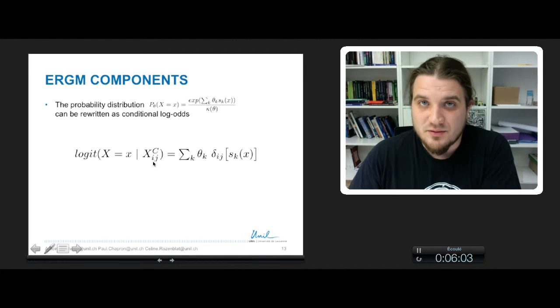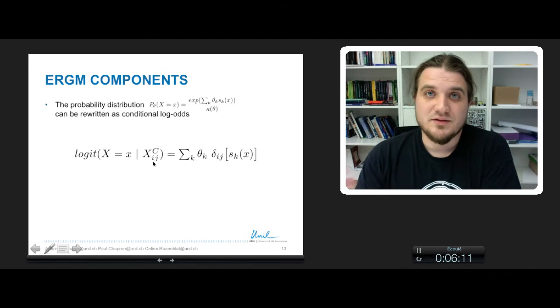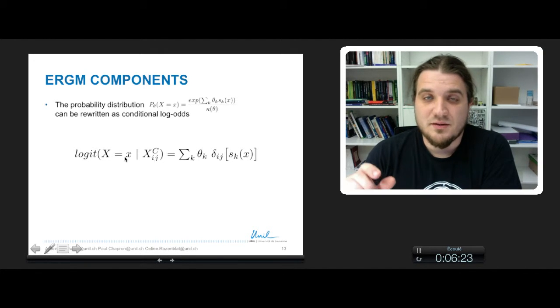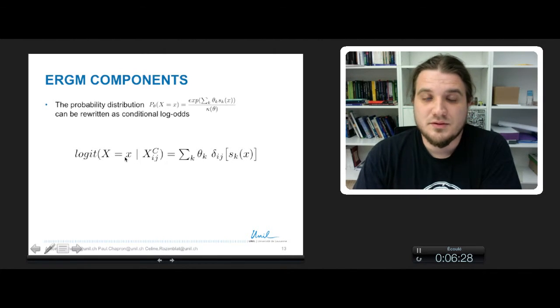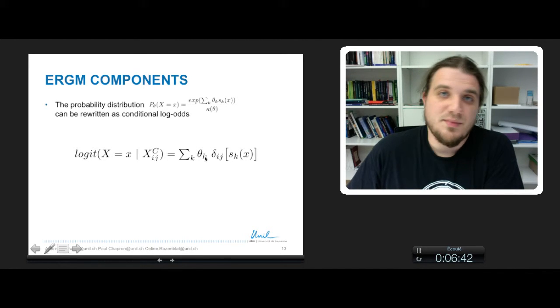xij is the random variable of the presence of a link between a node i and j. And the complement of this variable is every other link variable than i,j. So in fact, this is the probability to observe a change between the state of the link between i and j before and after a network evolution process. And since you take the logit of this expression, this part of the equation is rewritten as a linear combination of theta k, the same parameters as before, and delta ij of sk.